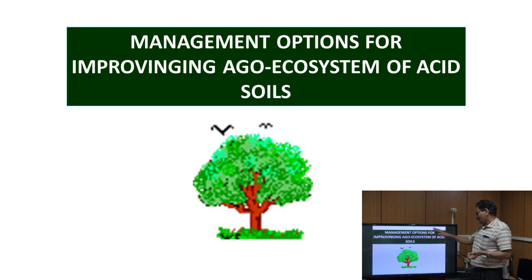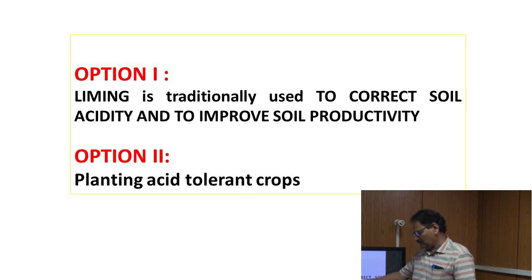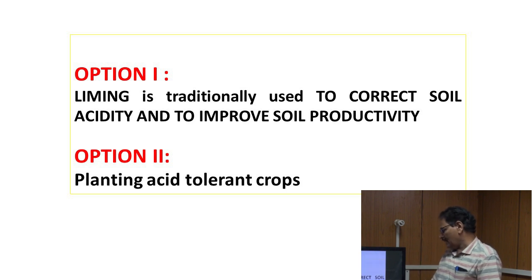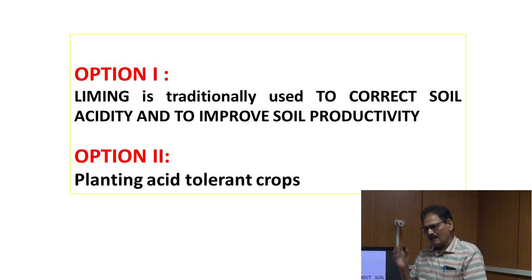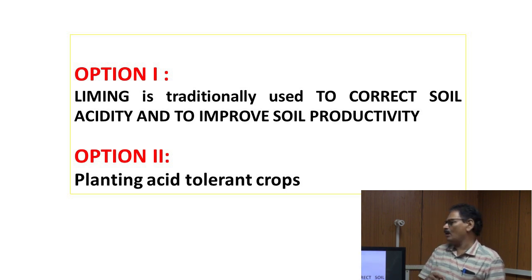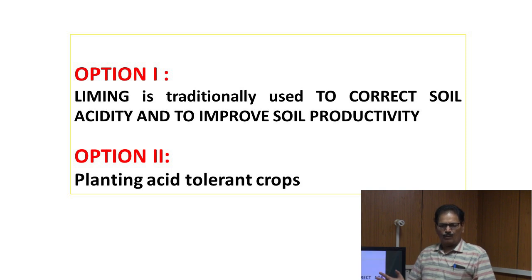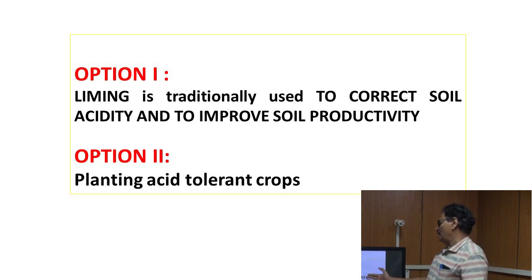Management options for improving the agro-ecosystem of acid soil: The first option is liming, which is traditionally used to correct acidity and to improve soil productivity. One other option also very important is to select acid-tolerant crops for planting. There are so many species and cultivars that can tolerate the acidic condition and can grow well in acid soil. In the management point of view, you can apply locally available liming material to improve soil acidity in the farmer field, and second, you select a suitable planting material.